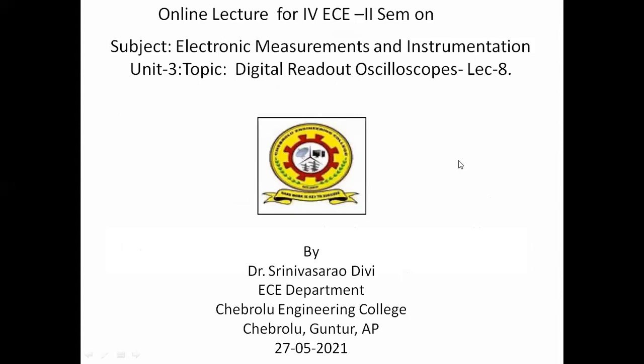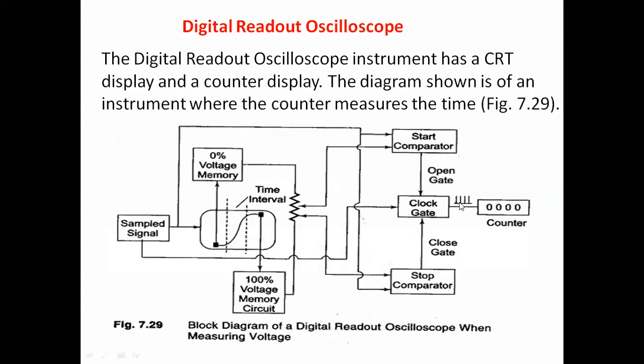After sampling and storage oscilloscopes, the next type is the digital readout oscilloscope. This oscilloscope is used to measure how much time it was taken for each sample — from sample to sample, how much time was taken. That time is read by using a counter. This is the block diagram representing the digital readout oscilloscope when measuring voltage.